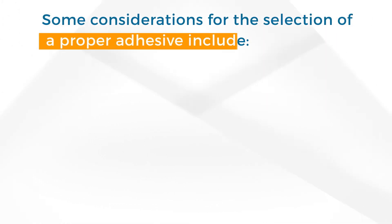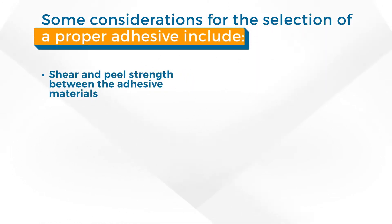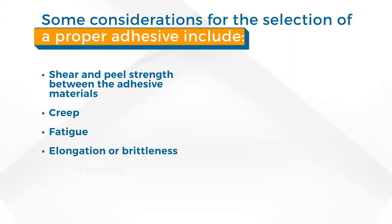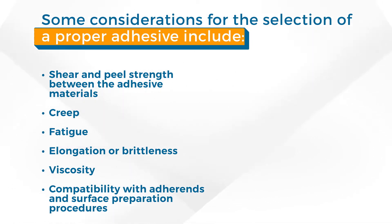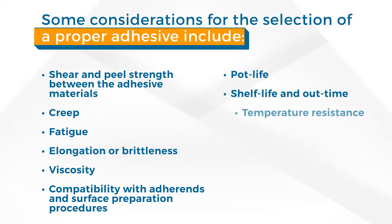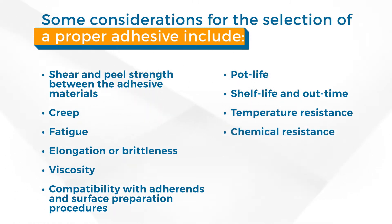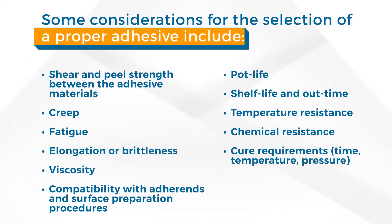Some considerations for the selection of a proper adhesive include shear and peel strength between the adhesive materials, creep, fatigue, elongation or brittleness, viscosity to ensure the adhesive stays in place during application, fills the joint, and wets to the bond surfaces, compatibility with adherents and surface preparation procedures, pot life to ensure that adhesives do not begin curing before the assembly is complete, shelf life and out time, temperature resistance to ensure the joint does not fail due to excessive heat or cold, chemical resistance to ensure adhesives do not degrade by expected chemical exposure, and cure requirements including time, temperature, and pressure to ensure the adhesive is compatible with the bonding process.